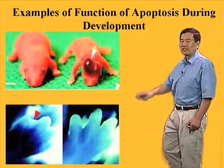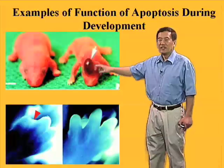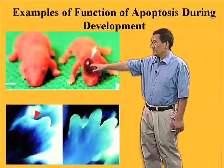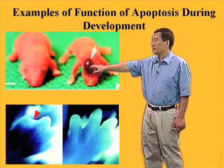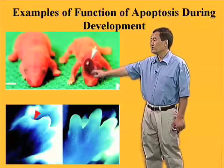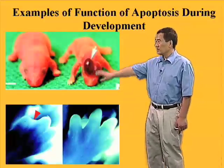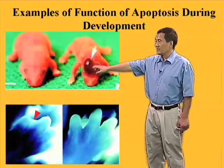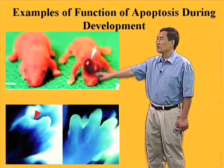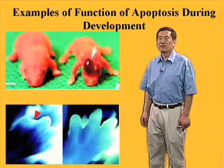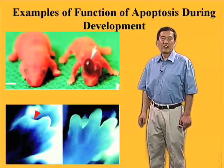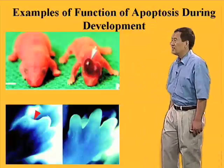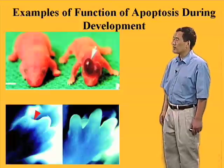Here are two visual demonstrations of what will happen if apoptosis cannot occur properly during development. This mouse has a gene that is required for apoptosis knocked out from its genome. As a result, this mouse has too much brain tissue that grows out of the skull. You may already know that more than half of the neurons ever generated have to die by apoptosis even before we are born. If that process cannot happen properly, you are not going to get a normal animal.